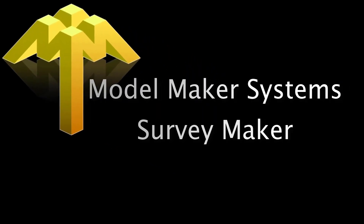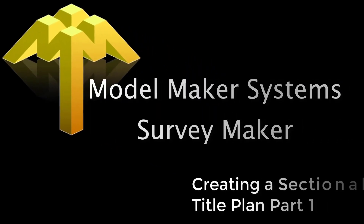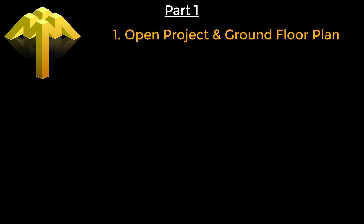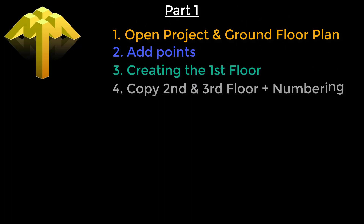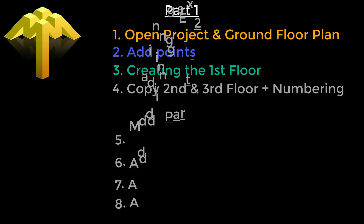Welcome to SurveyMaker creating a sectional title plan part 1. In part 1 we will cover how to calculate the sectional title plan in 4 easy to follow steps: open project and ground floor plan, add points, creating the first floor, and copy second and third floor plus numbering.